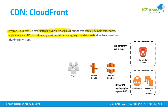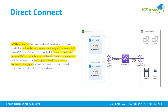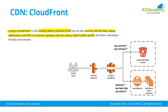Amazon CloudFront is a content delivery network which securely delivers data, videos, applications, and APIs to your backend services for low latency and high transfer speed. Developers can configure CDN in front of their website.